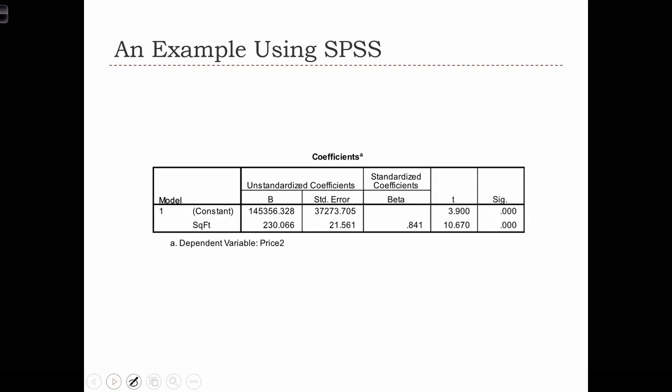When we run a regression analysis, in this case between the price of a house and the square foot of the house, or the size of the house, one of the tables of outputs that we get is called the coefficients table.